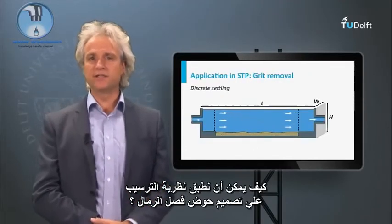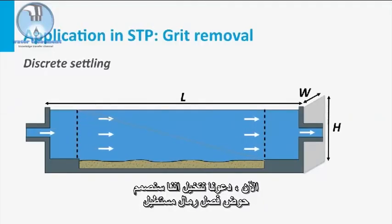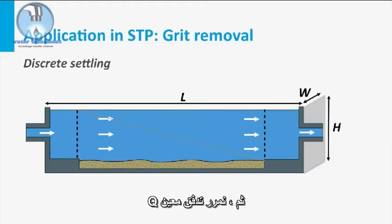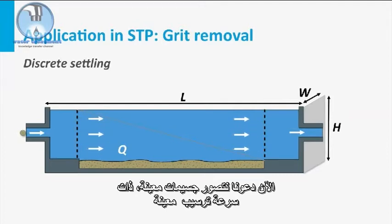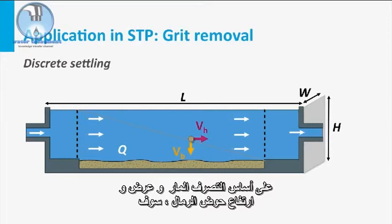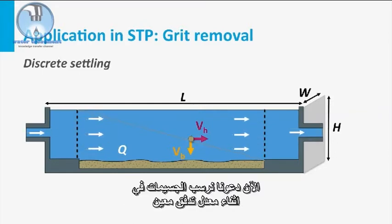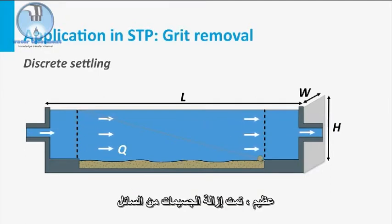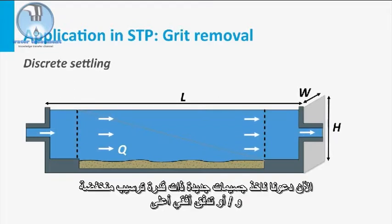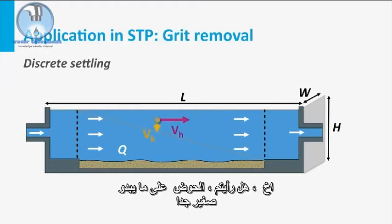How can we apply the settling theory to the design of our grit chamber? Let's imagine we are going to design a rectangular grit chamber with a certain length, height and width, and apply a certain flow rate q. A certain particle with a given settling velocity will flow with a certain horizontal velocity based on q and the chamber dimensions. If the particle is sedimented at the given flow rate, it is removed from the liquid. However, with a lower settlability or a higher horizontal flow, the tank is apparently too small.